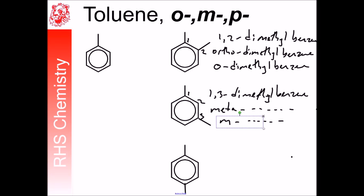If we were typing this out, we would make sure that the ortho and the o and the m and the meta all were on italics. Here we have 1,4-dimethyl benzene, also known as para or p. The para and the p would get italicized.